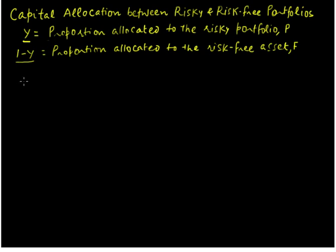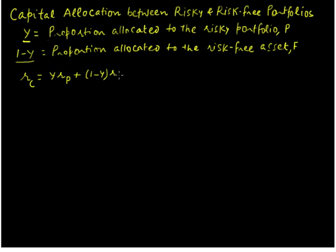If we want to compute the return on the complete portfolio, let us write it as RC, where R stands for return and C stands for complete. We can write it as Y multiplied by the return from the risky portfolio, Rp, plus 1-Y multiplied by the return on the risk-free asset, Rf.